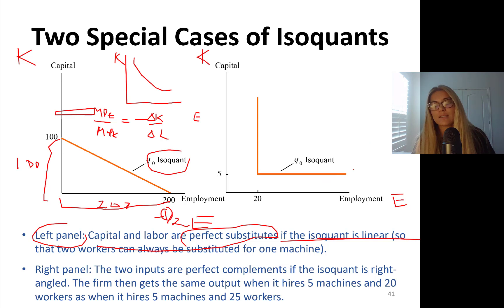Here in this case, for instance, you can produce this level of output, Q0 level of output if you only put 20 units of labor and 5 units of capital. If you put 30 units of labor and 5 units of capital, you still produce only this Q0 level. Why? Because they are only useful to be used in 5 to 20 proportion. It's really interesting. So right panel says that the two inputs are perfect complements.